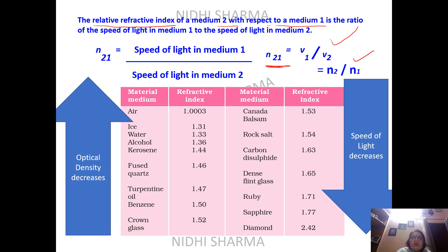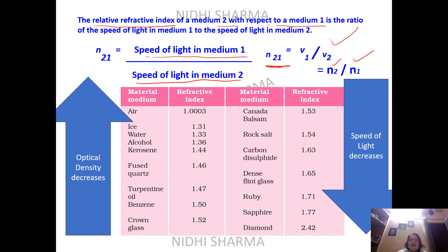If writing in terms of speed of light in medium 1 and medium 2, it is V1 upon V2. If writing in terms of refractive indices, it is N2 upon N1, where N2 is the refractive index of medium 2 and N1 is the refractive index of medium 1.